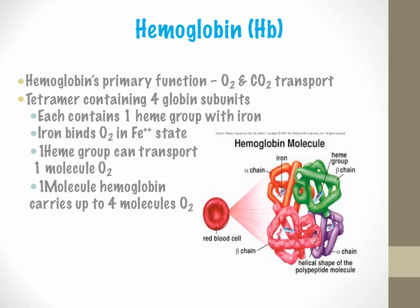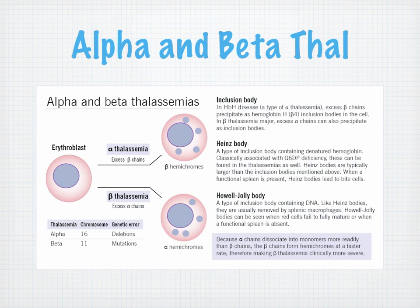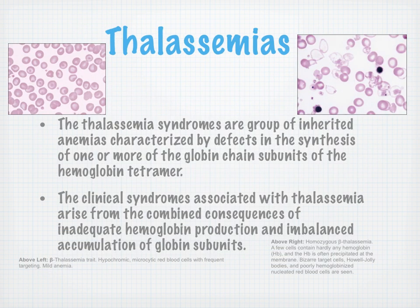One or more of those globin chain subunits is defective. The clinical syndromes associated with thalassemia arise from the combined consequences of both inadequate hemoglobin production and imbalanced accumulation of those subunits. Looking at the blood smear slides: thalassemia trait shows hypochromic microcytic red blood cells with frequent targeting and mild anemia. In homozygous beta thalassemia, you'll note bizarre target cells, Howell-Jolly bodies, and poorly hemoglobinized nucleated red blood cells.